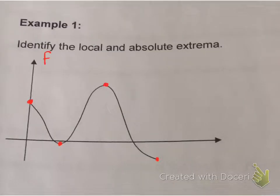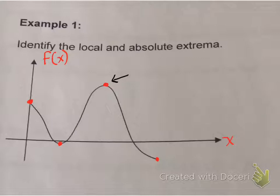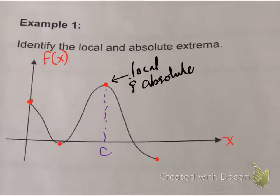You're asked to identify the local and absolute extrema on this graph. Where they are located would be at those red dots — these red dots would be places where you could see local and/or absolute extrema. That particular point right there would be known as an absolute max, and it is also a local max, because on either side I can test it and determine it must be a local maximum.